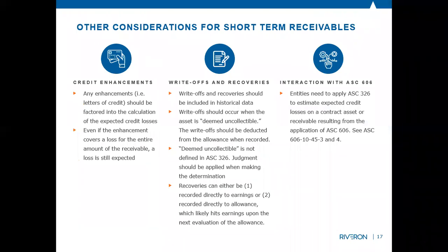One other consideration: what about credit enhancements? For many entities, especially in manufacturing, there are letters of credit involved. The FASB responded that, similar to what we said earlier, all types of receivables should expect to have a credit loss — even if 100% of your receivable is covered by a bank through a letter of credit, that bank still has some credit risk. So while it might be very, very low, you still have a loss against that credit-enhanced receivable. For write-offs and recoveries, these should be included in your historical data. One term mentioned in ASC 326 is that write-offs should determine when an item is deemed uncollectible — this is an area of judgment, and uncollectibility is determined by each individual entity based on history.